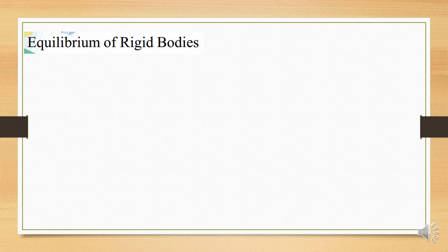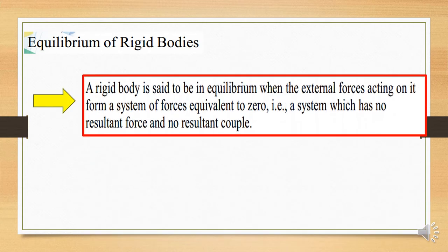What is the equilibrium of rigid bodies? How can we identify whether an object is in a condition of equilibrium? A rigid body is known as being in equilibrium when the external forces acting on a system are equivalent to zero, and the system has no resultant force and no resultant couple.